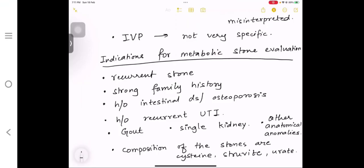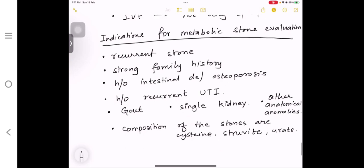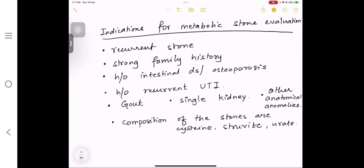There are some indications for metabolic stone evaluation. You have to look for metabolic causes or not. One: if there is recurrent stone formation. Two: if there is a strong family history of ureteric or renal stones. Three: there is any intestinal obstruction or osteoporosis—that means some metabolic disorder patients already have. Fifth, you can have gout. Then recurrent UTI. If there is a single kidney, if there are other anatomical anomalies, and if the composition of the stones are cysteine, uric, or struvite stones.